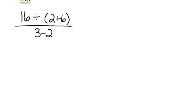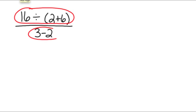A fraction bar is a grouping symbol, and it really just means that you are going to do all the operations on the top — the numerator — and do all of the operations on the bottom, in the denominator. The very last thing you do is divide the numerator by the denominator. A fraction bar is really just a division sign, but you have to perform all of the operations on the top first, then all of the operations on the bottom, and then the last thing you do is divide.